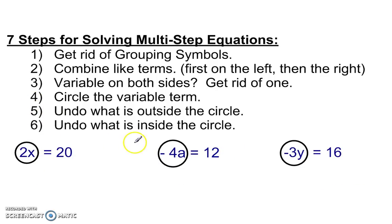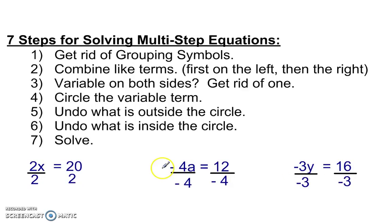Step 6, undo what's inside the circle. So here is a 2x. We're going to undo this by dividing by 2. 2 times x, so divide by 2. Here, divide by negative 4. Divide by negative 4. In this last one, divide by negative 3. Divide by negative 3. Undo that, and then finally solve.